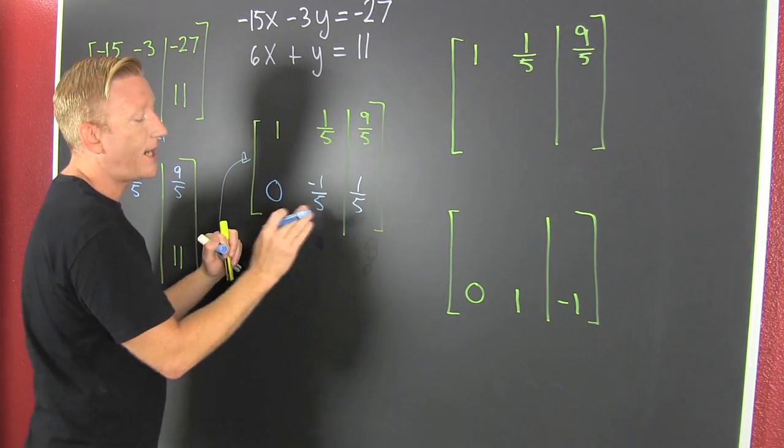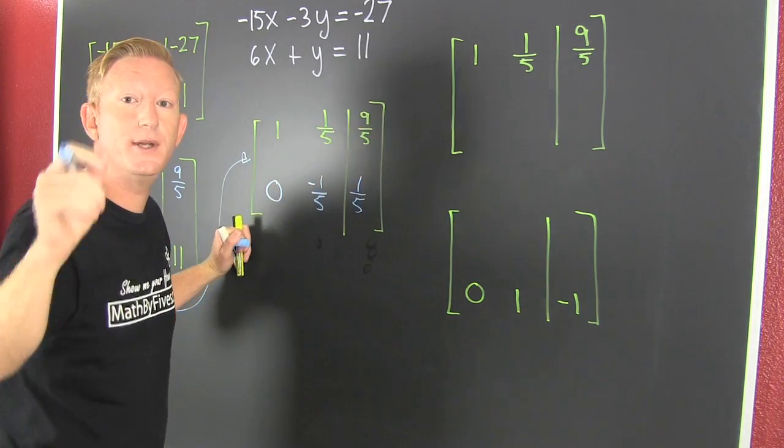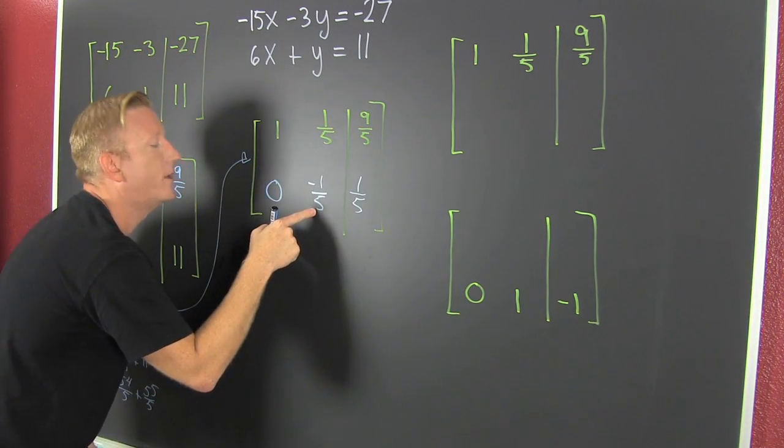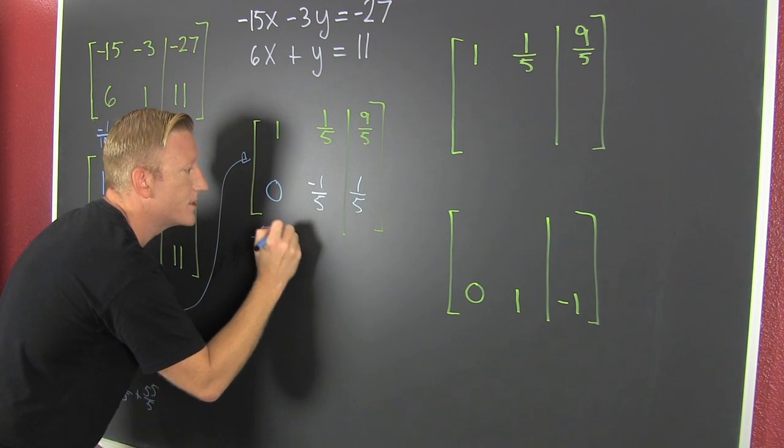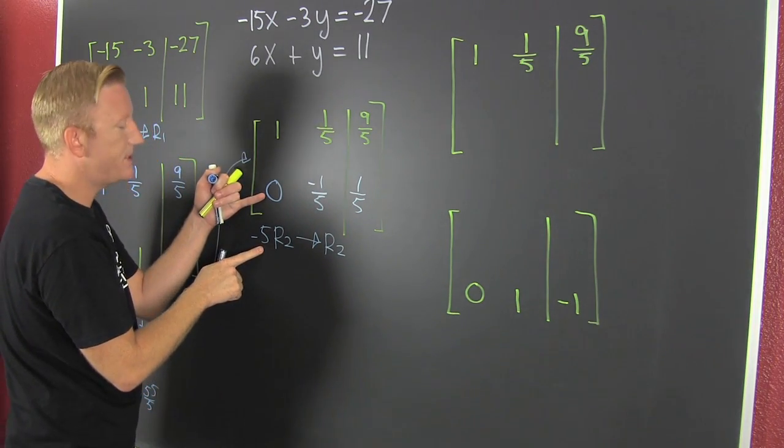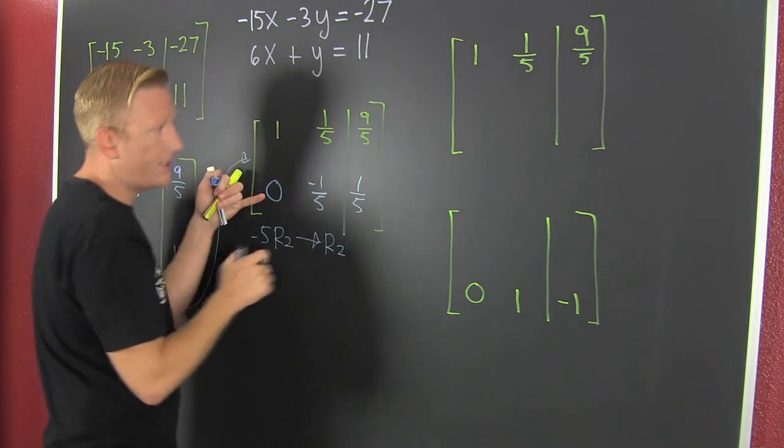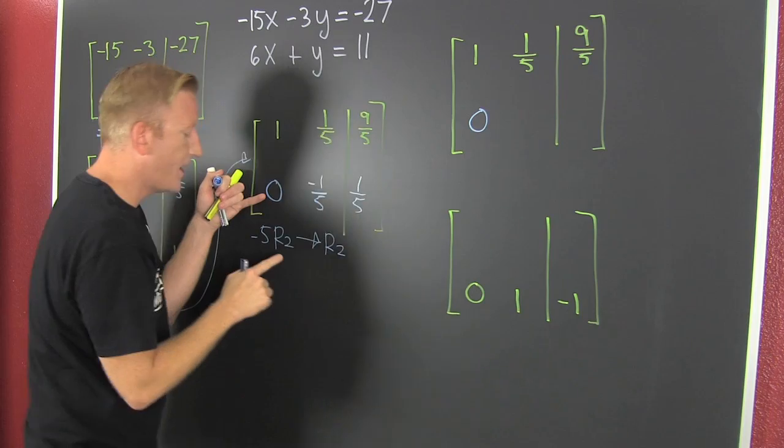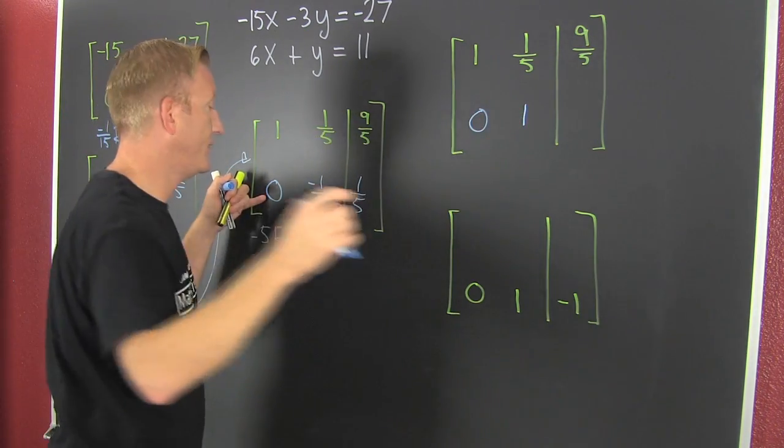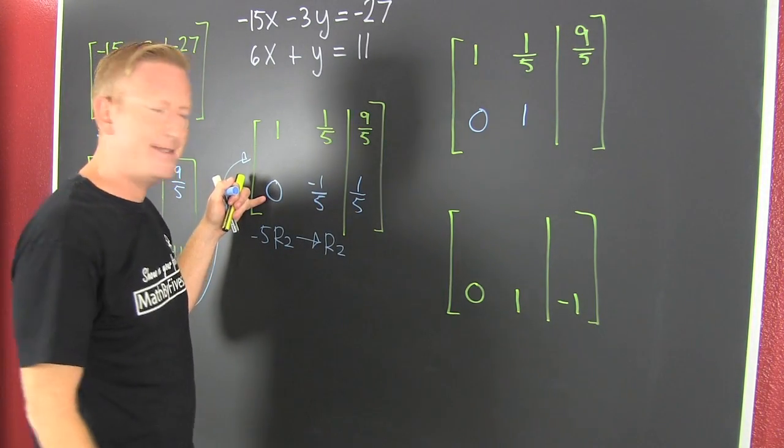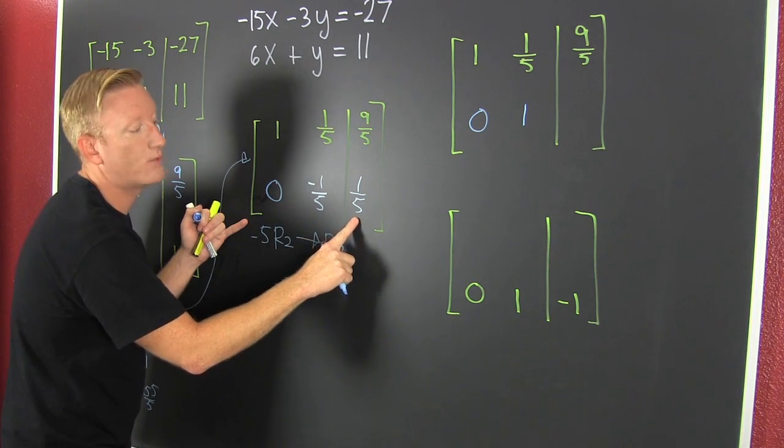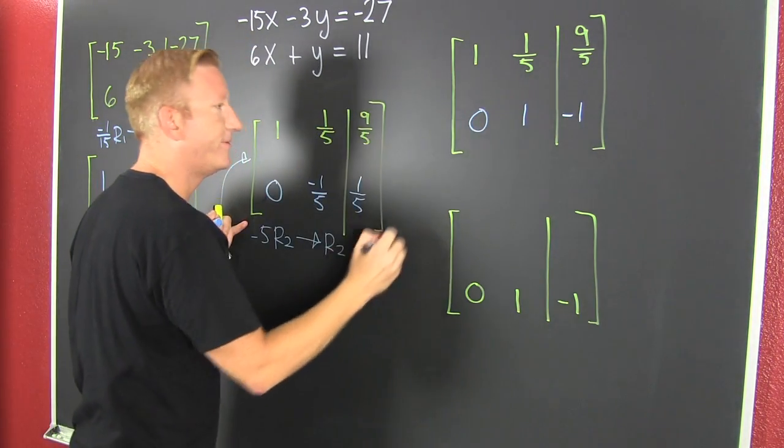So now what? Could I add this row to that and get my 0 there? Sure. But we're doing it as if a computer would do it. And this is going to be get a 1 right there. So that's minus 5 times row 2. Put it back in row 2. Minus 5 times 0 is 0. Minus 5 times minus 1/5 is positive 1. How nice! Because we were trying to get a 1 right there. Minus 5 times 1/5 is minus 1. Fine.